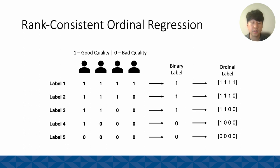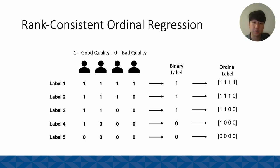Another approach that we took was ordinal regression, which is a type of regression analysis used to predict an ordinal or ordered dependent variable. Rank-consistent ordinal regression is a variation of ordinal regression that learns to predict the ranking of the dependent variable rather than its exact value. For image quality studies in natural images, there are hundreds or up to thousands of annotators that label the images on a scale of 0 to 10 or 0 to 100.